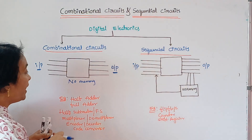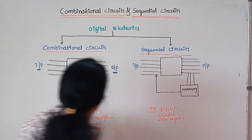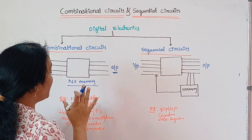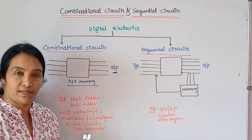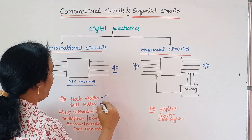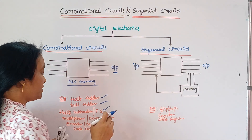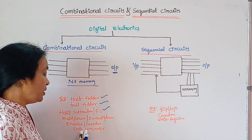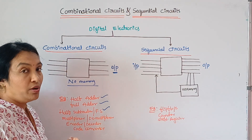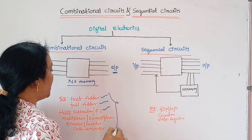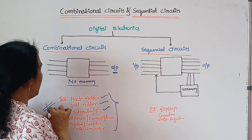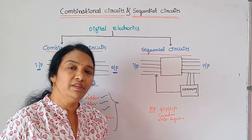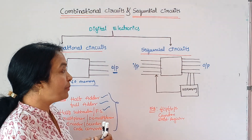For combinational circuits, the topics we need to cover include the demultiplexer, decoder, encoder, code converter. These are the components covered in the combinational circuits unit.